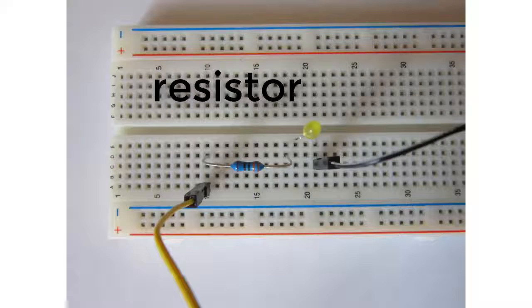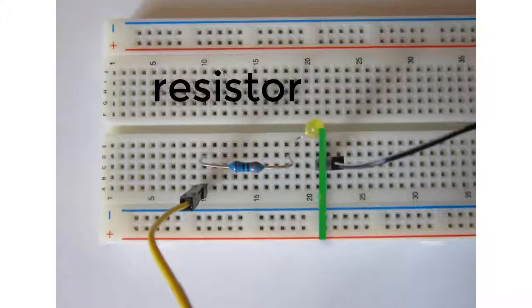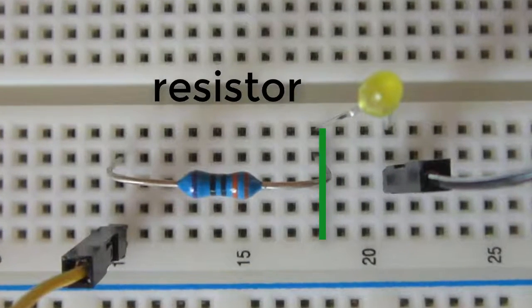Now take the resistor. Note that the holes in one line are linked together, which is marked in green here. Plug in the resistor according to the picture. The longer leg of the LED is now connected to the resistor.